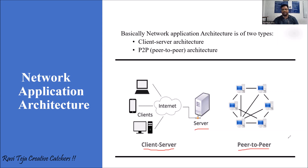In the peer-to-peer architecture, there is no interaction with servers — servers need not be used. Everything will be directly connected from one client to another client. In this architecture we consider clients as peers, so each client or peer is directly connected to another peer. Let's see how they work and what are the characteristics of both client-server as well as peer-to-peer.